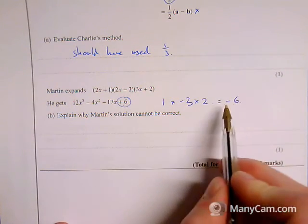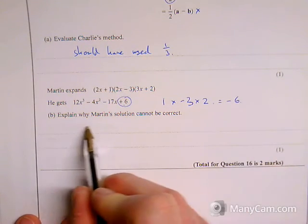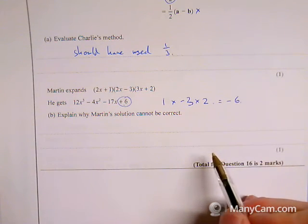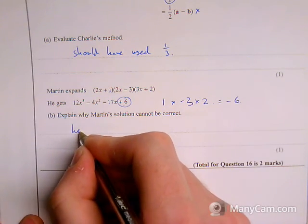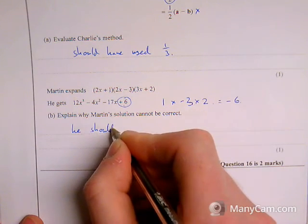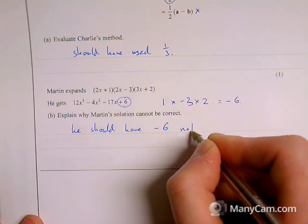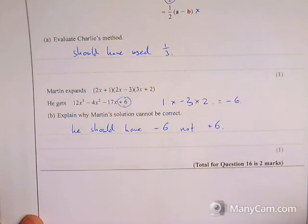So he got plus 6, but it should have been minus 6. All you need to write for this, to explain why Martin's solution can't be correct, is that he should have got minus 6, not plus 6. And that would get you the full two marks for that question.